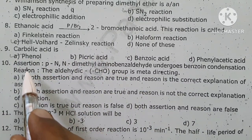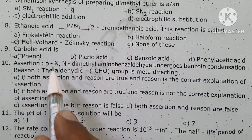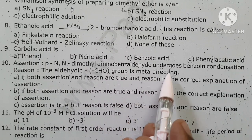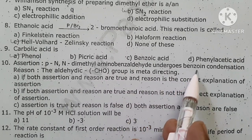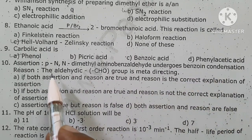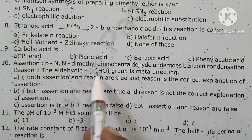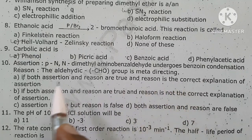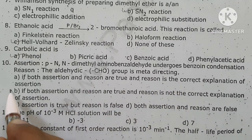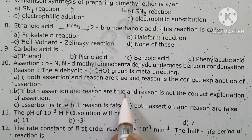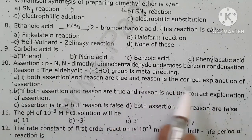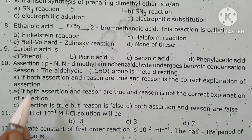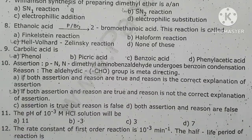Assertion: Para-N,N-dimethylaminobenzaldehyde undergoes benzoin condensation. The aldehyde group is meta-directing. Both assertion and reason are true, but the reason is not the correct explanation for the assertion.